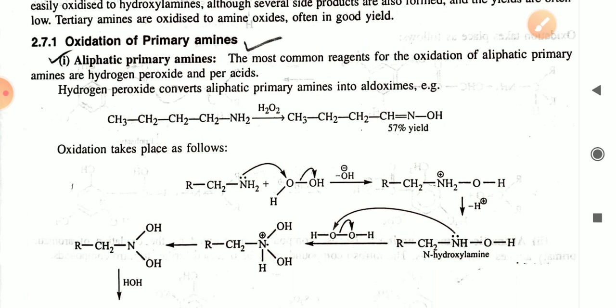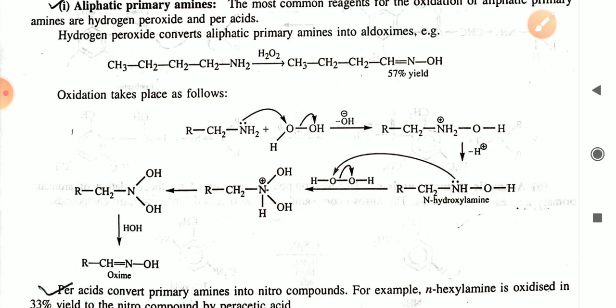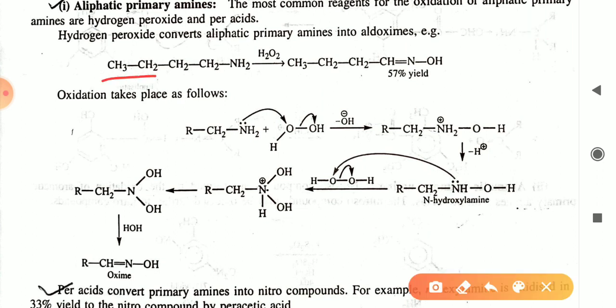Now we learn about the oxidation of primary amines. For aliphatic primary amines, the common reagents are hydrogen peroxide or peracid. Hydrogen peroxide converts the aliphatic primary amine into the aldoxime. For example, in the presence of H₂O₂, the amine converts into the aldoxime with a yield of 57.5%.